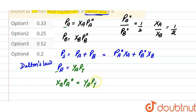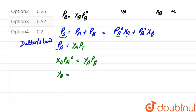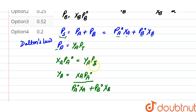We can write total pressure as PA° × XA + PB° × XB. Therefore, mole fraction of A in vapor phase equals mole fraction of A in liquid phase × PA°, divided by (PA° × XA + PB° × XB), which is the total vapor pressure of the solution.